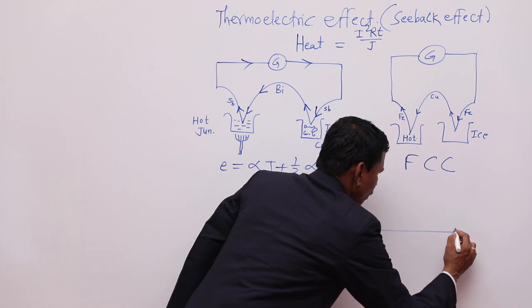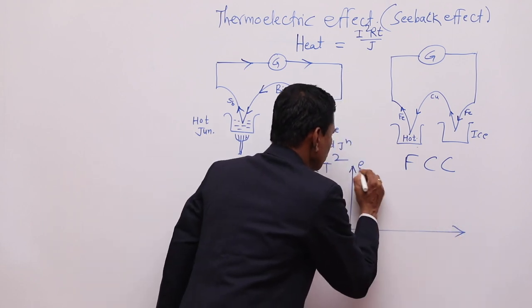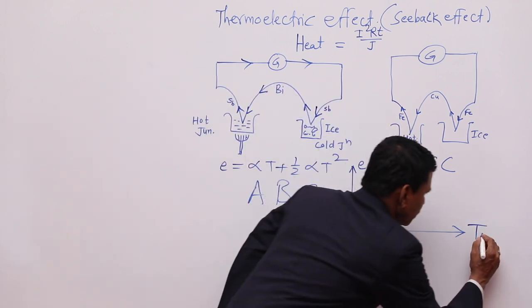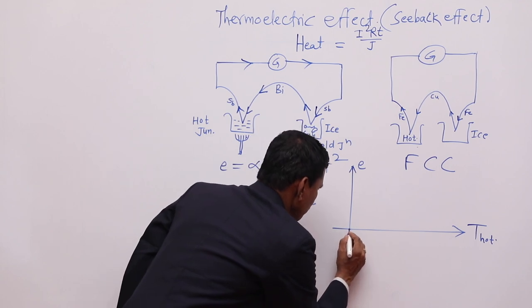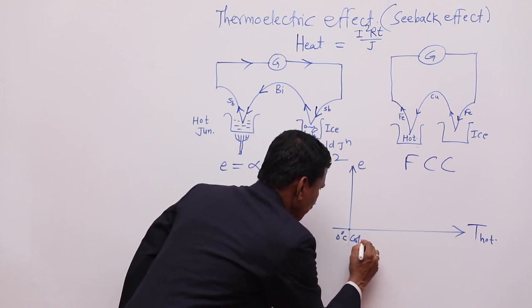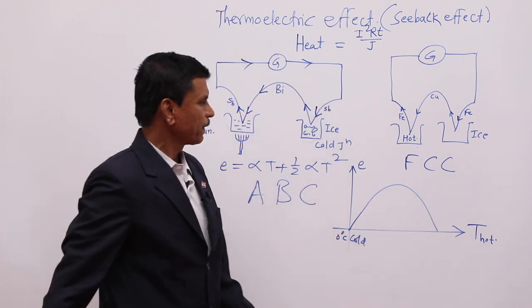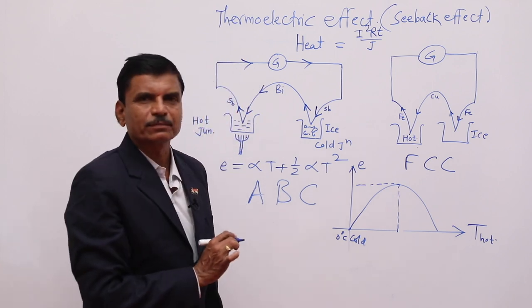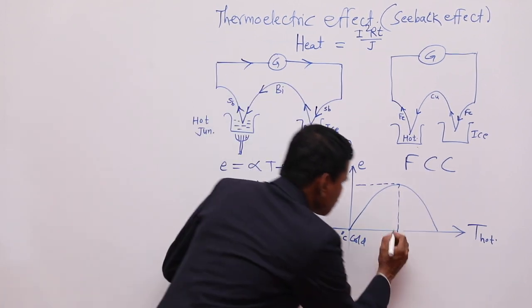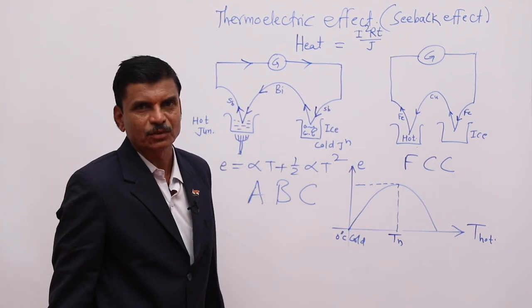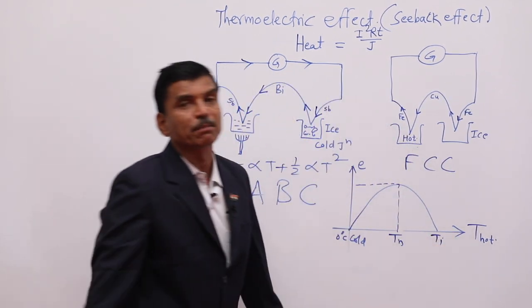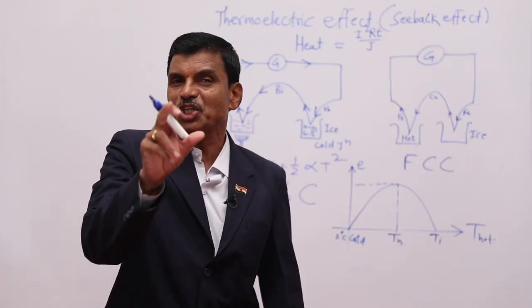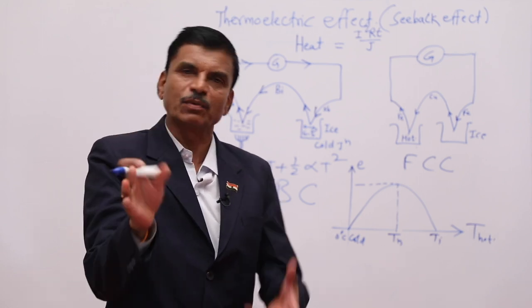If we draw a graph of EMF produced versus the temperature of the hot junction (with the cold junction at 0°C), the graph rises to a maximum EMF at a particular temperature. This temperature is called the neutral temperature. Beyond this, there is another temperature called the inversion temperature. If we go beyond the inversion temperature, the direction of the thermoelectric EMF and current will reverse.